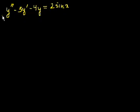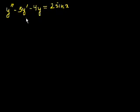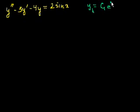The first step is to solve the homogeneous equation, setting the left-hand side equal to 0. You get the characteristic equation r squared minus 3r minus 4 equals 0. The solutions are r equals 4 and r equals minus 1, giving the general homogeneous solution: c1·e to the 4x plus c2·e to the minus x.